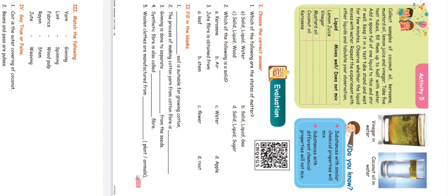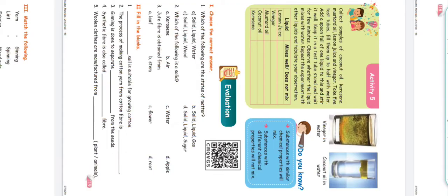Activity 5: Collect samples of coconut oil, kerosene, mustard oil, lime juice, and vinegar. Take 5 test tubes, fill them up to half with water, and add a spoonful of one liquid to each and stir well. Observe whether the liquid mixes with water. For example, lime juice will mix in water. Coconut oil or kerosene will not mix — they will separate in water.